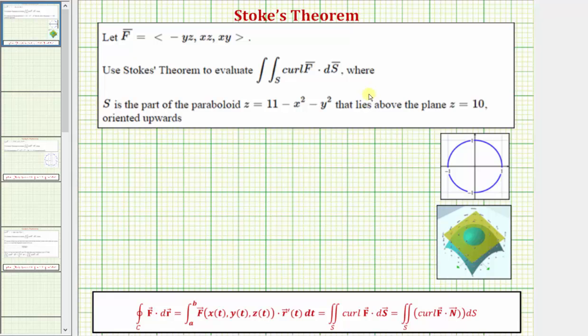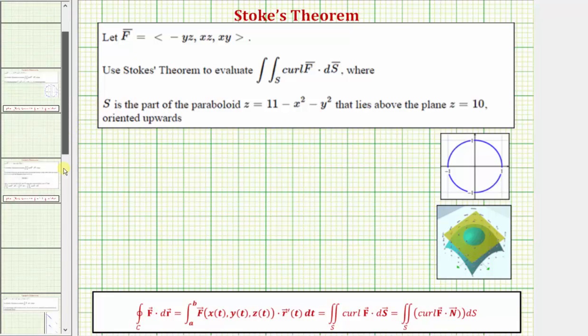We want to evaluate this where the surface s is the part of the paraboloid z equals 11 minus x squared minus y squared, that lies above the plane z equals 10, oriented upwards. Let's review Stokes' Theorem.